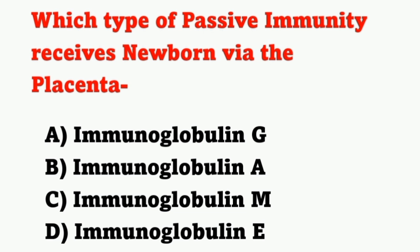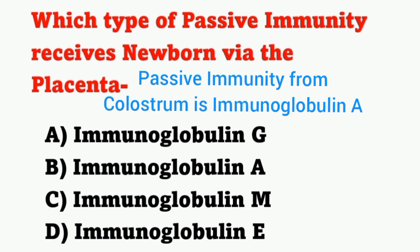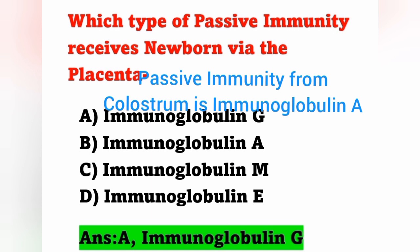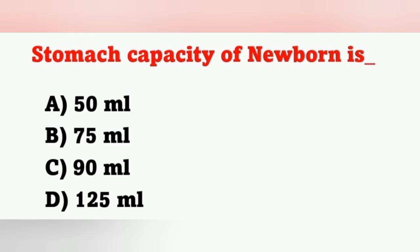Next question: Which type of passive immunity does a newborn receive via placenta? Options: A) Immunoglobulin G, B) Immunoglobulin A, C) Immunoglobulin M, D) Immunoglobulin E. The newborn receives passive immunity via placenta through IgG (Immunoglobulin G). Option A is correct. The immunoglobulin received from colostrum — the first breast milk — is IgA.